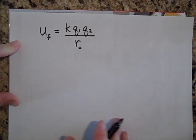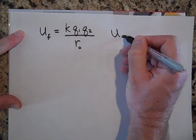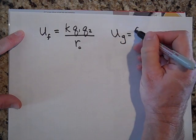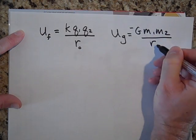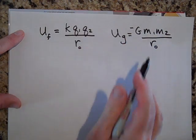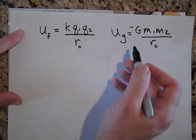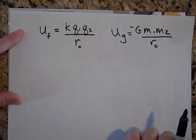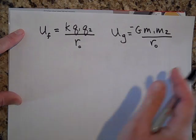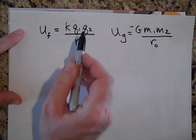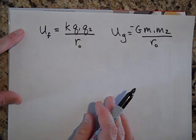That's very similar to gravitational potential energy, which is negative G M1 M2 over R0. The gravitational version has a negative sign because things are trapped — they're bound. But the positive charge in our original problem wasn't bound; when you let go, it flew off to infinity. Now, if one charge is negative and the other is positive, you get negative potential energy and the system can be bound.